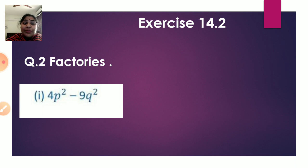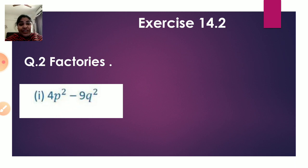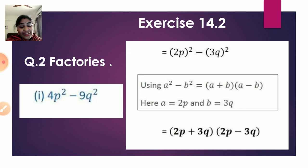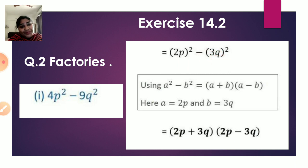Now question number 2 — the first sum is 4p² - 9q². Since 4 = 2² and 9 = 3², we write this as (2p)² - (3q)², which is in the form a² - b² with a = 2p and b = 3q. Using the identity a² - b² = (a + b)(a - b), the factors are (2p + 3q)(2p - 3q).